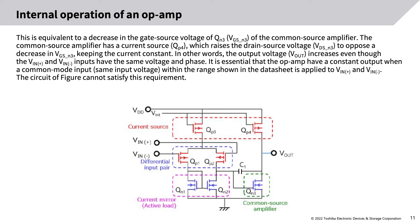This decrease is equivalent to a decrease in the gate-source voltage VGSN3 of the common source amplifier. The common source amplifier has a current source QP4 which raises the drain-source voltage VDSN3 to oppose the decrease in VGSN3, keeping the current constant. In other words, the output voltage Vout increases even though the VIN+ and VIN- inputs have the same voltage and phase. It is essential that the op amp have a constant output when a common-mode input within the range shown in the datasheet is applied to VIN+ and VIN-. The circuit without a current source cannot satisfy this requirement.